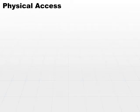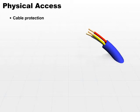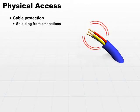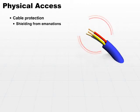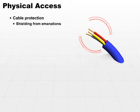Other types of physical access controls include cable protection. Cable protection can go two ways. First, we may want to shield our cables to protect them from emanations. The emanations are the radio waves or different types of signals that can be read and intercepted. Intercepted emanations can be decoded — it's the same thing as wiretapping.